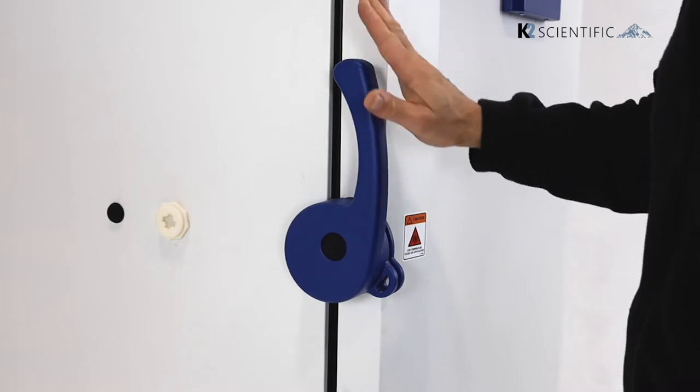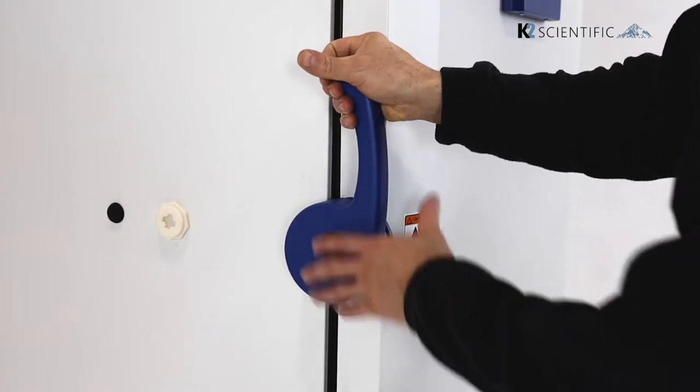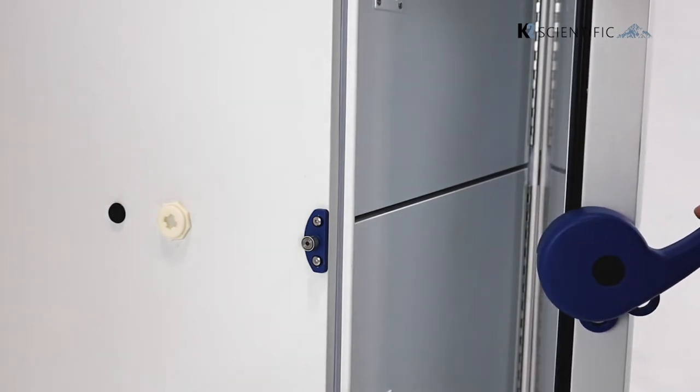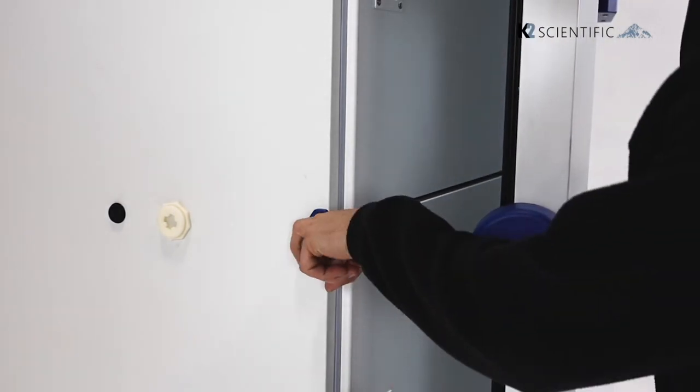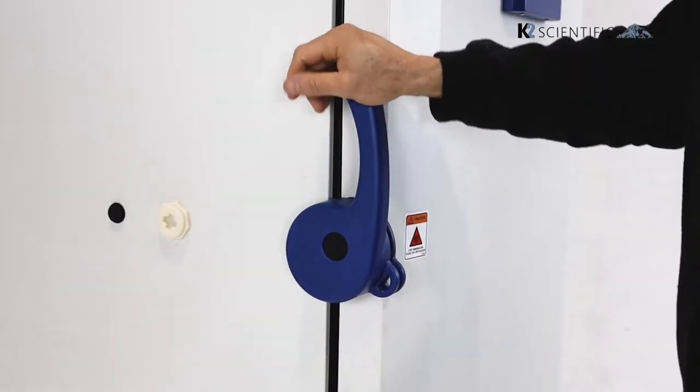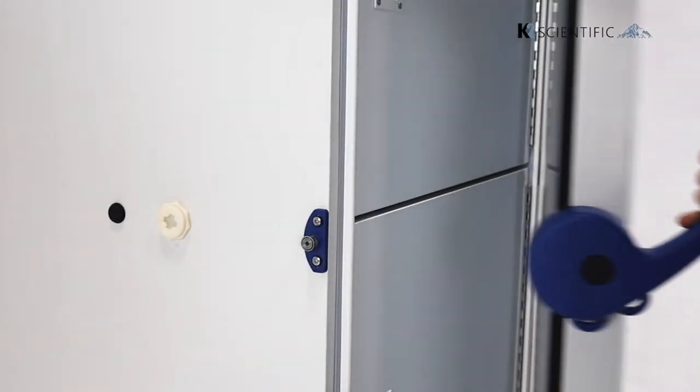When it's standing straight up, this is in the locked position. To open it, you pull the door handle down. There's a latch on the inside that rolls over this post that closes and opens the door.